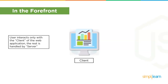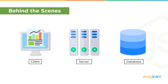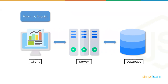Consider a scenario where a user interacts with a web application. The user only interacts with the front end, but there's a lot of work that goes behind the scenes. In a web application there's a front end, a server, and a database. The front end is developed using JavaScript and frameworks like Angular and React, while the server is built on Java, PHP, or Node.js.